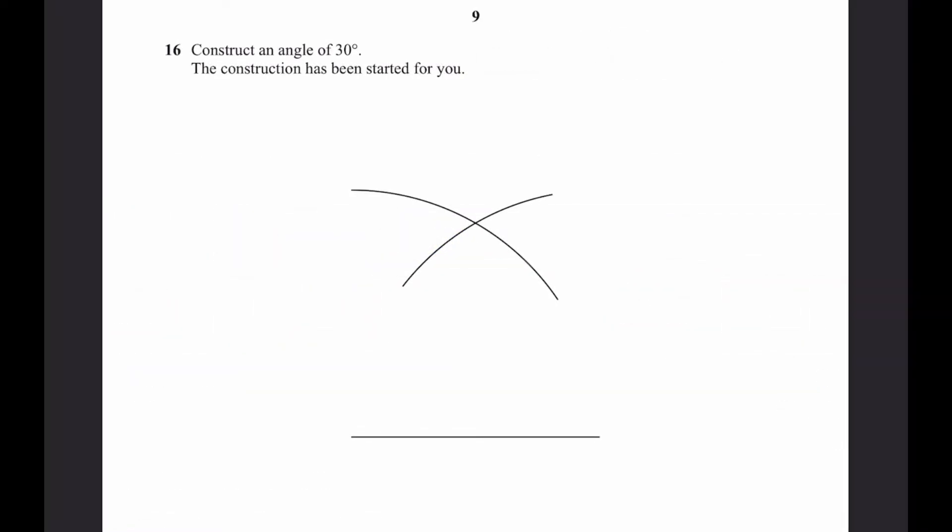Question 16, construct an angle of 30 degrees. The construction has been started for you. We can see that this construction is the construction of an equilateral triangle. So when we connect these two points to the third point, we'll notice that all three sides are going to be equal, and therefore it's equilateral. And therefore all three angles are going to be 60 degrees. Because we know that all three are 60 degrees, we can bisect one of these angles to get 30 degrees in them.